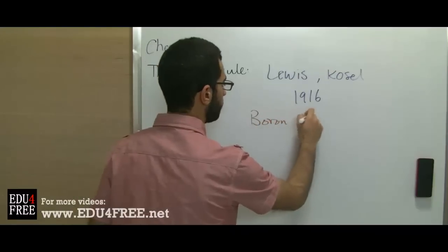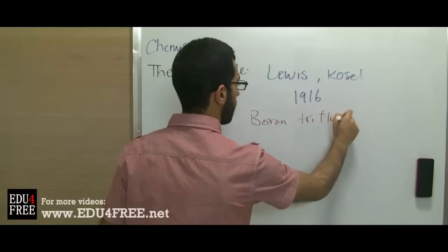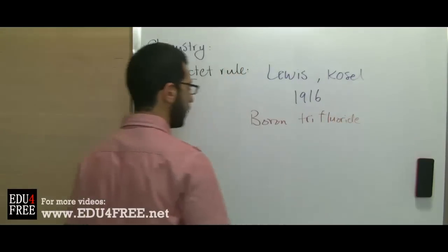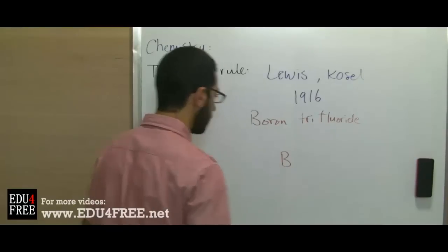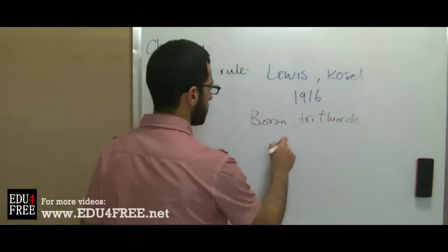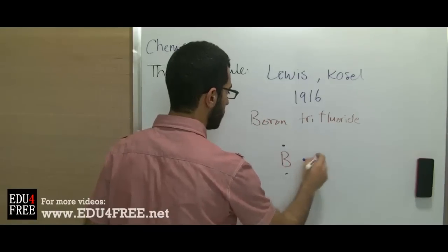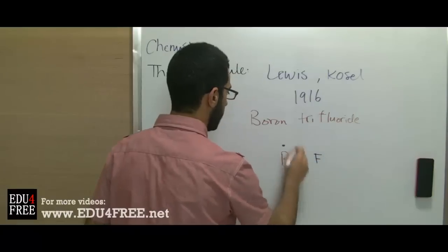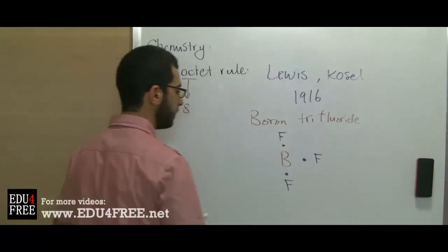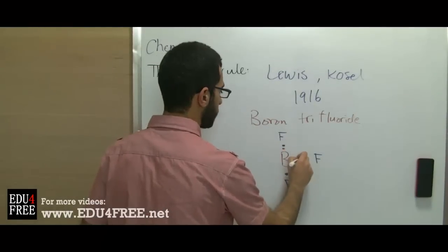For example, boron trifluoride. In boron trifluoride the boron atom only contains 6 electrons in the outermost energy level, because chlorine shares an electron and boron shares another electron.